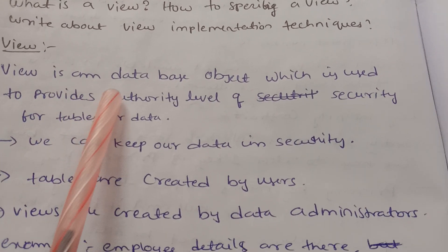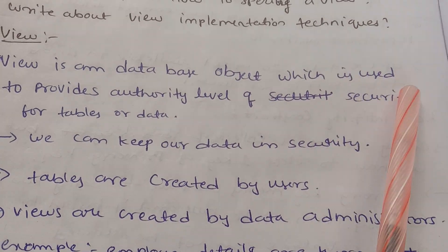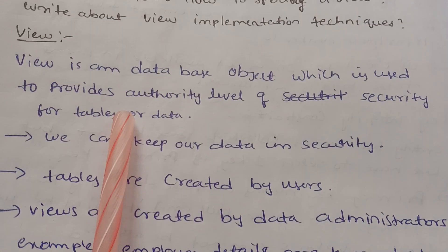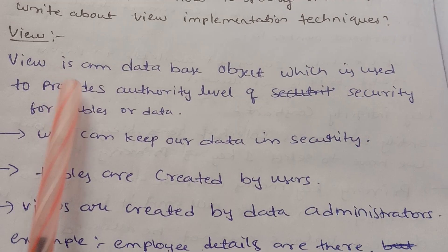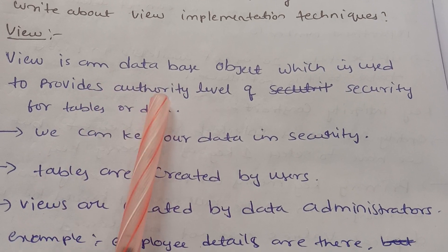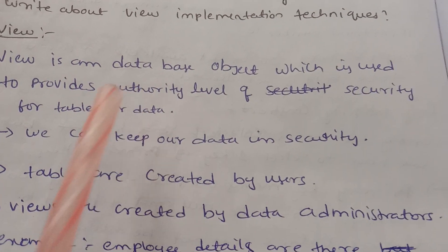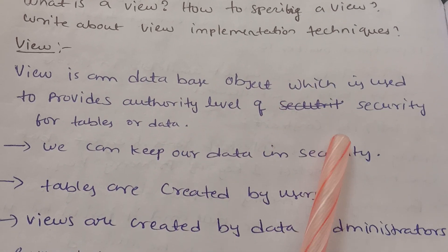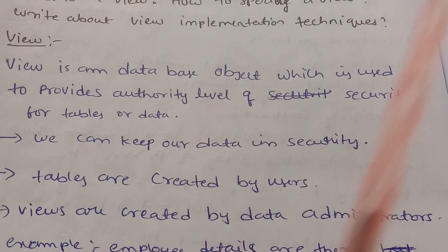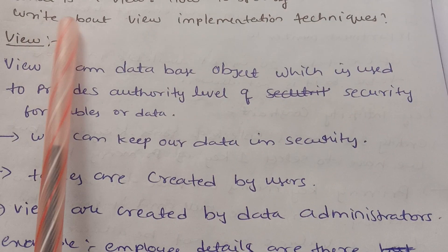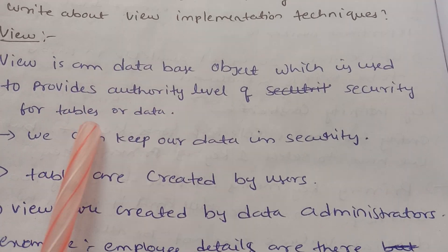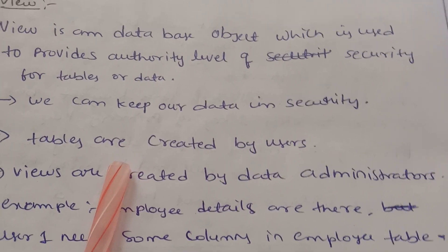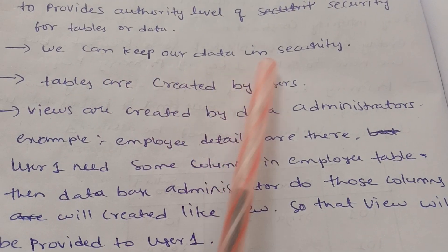A view is a database object which is used to provide an authority level of security for a table or data. We can keep our data secure.